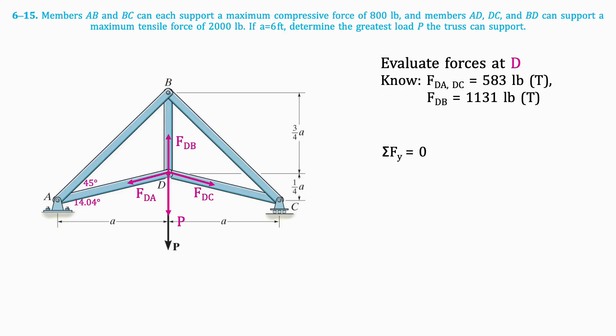Afterwards, we can write an equation for the sum of the vertical forces. The resulting equation is as follows, which when isolated for P, results in 848 pounds.